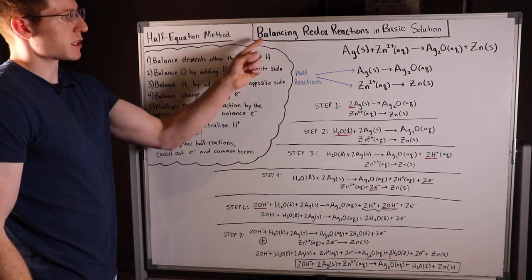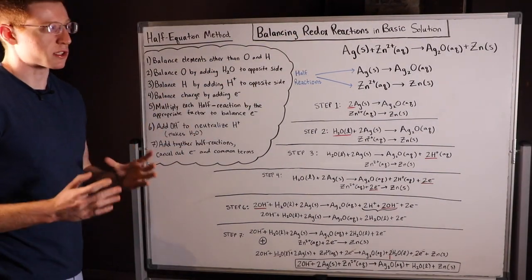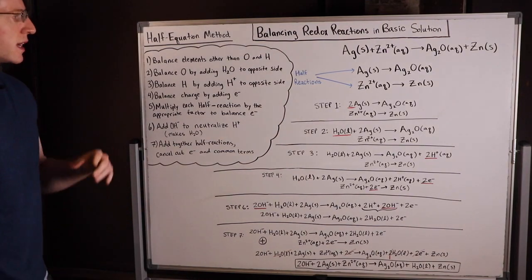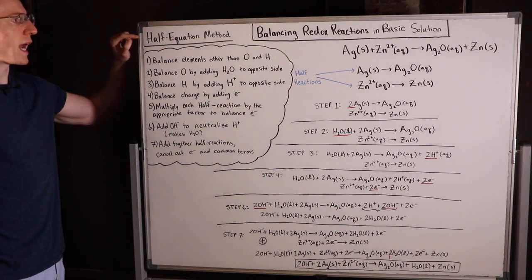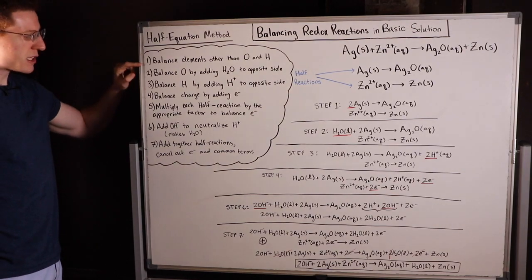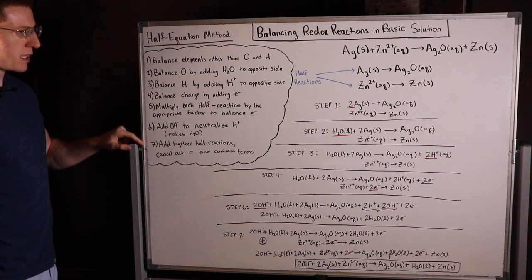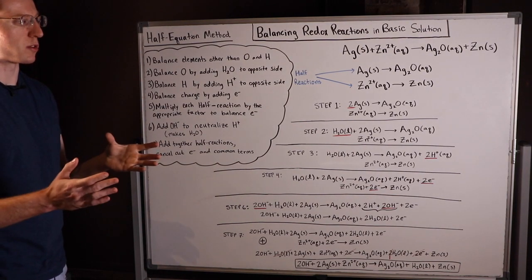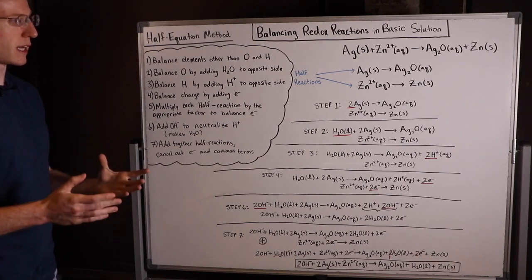In this video we're going to learn how to balance redox reactions in basic solutions or under basic conditions. The easiest way to do this is using the half equation method. I've listed out the steps of the half equation method here, so you just follow it like a cookbook recipe and you always end up with the right answer.